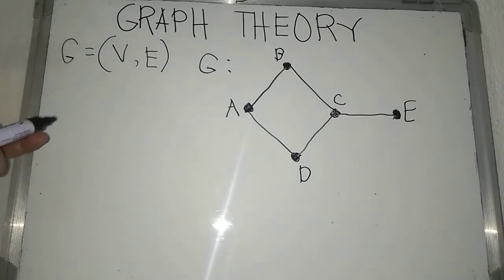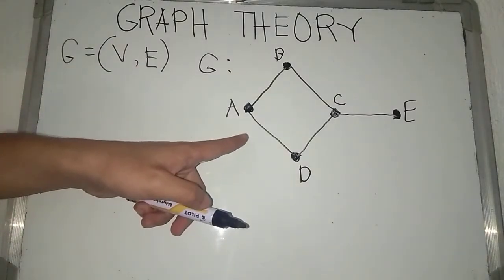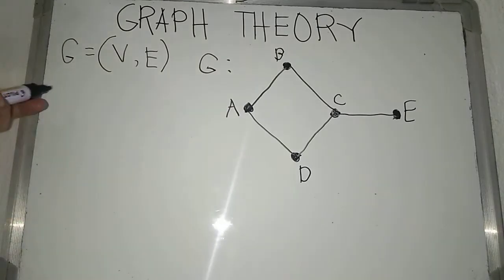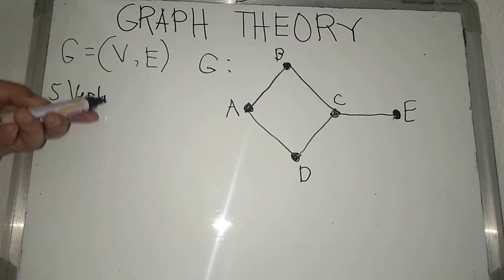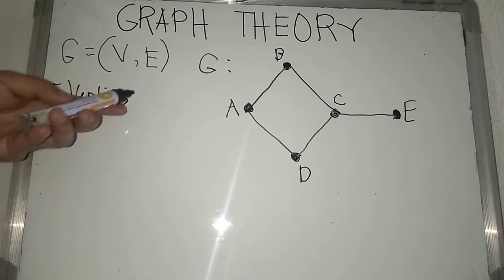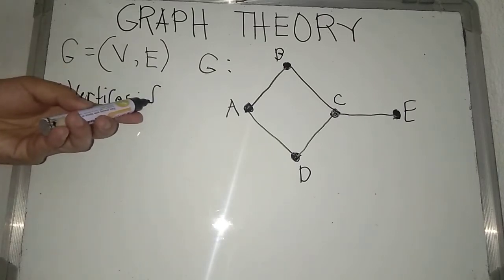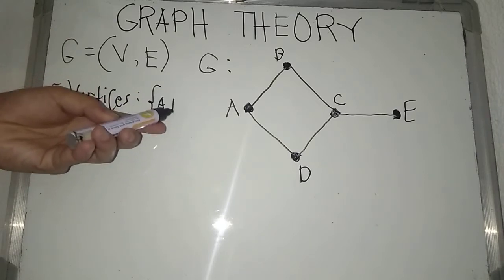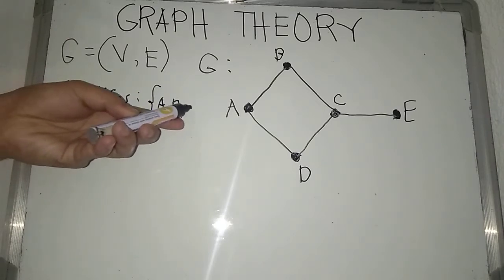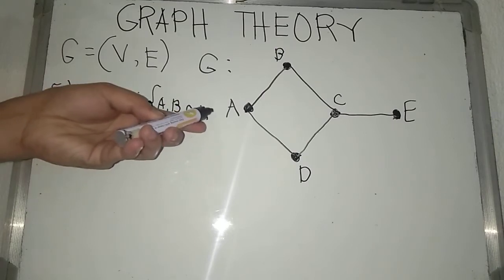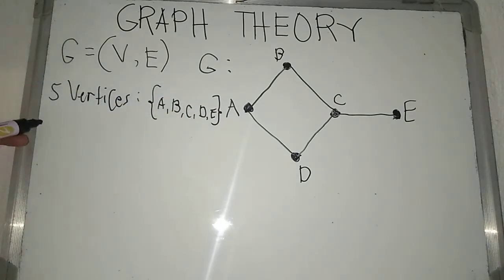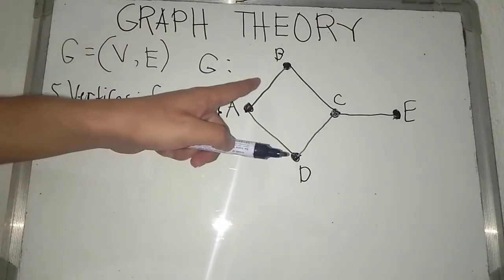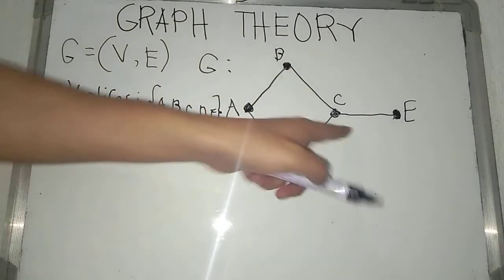Now, from this example, we have five vertices: A, B, C, D, and E. And we have also five edges.